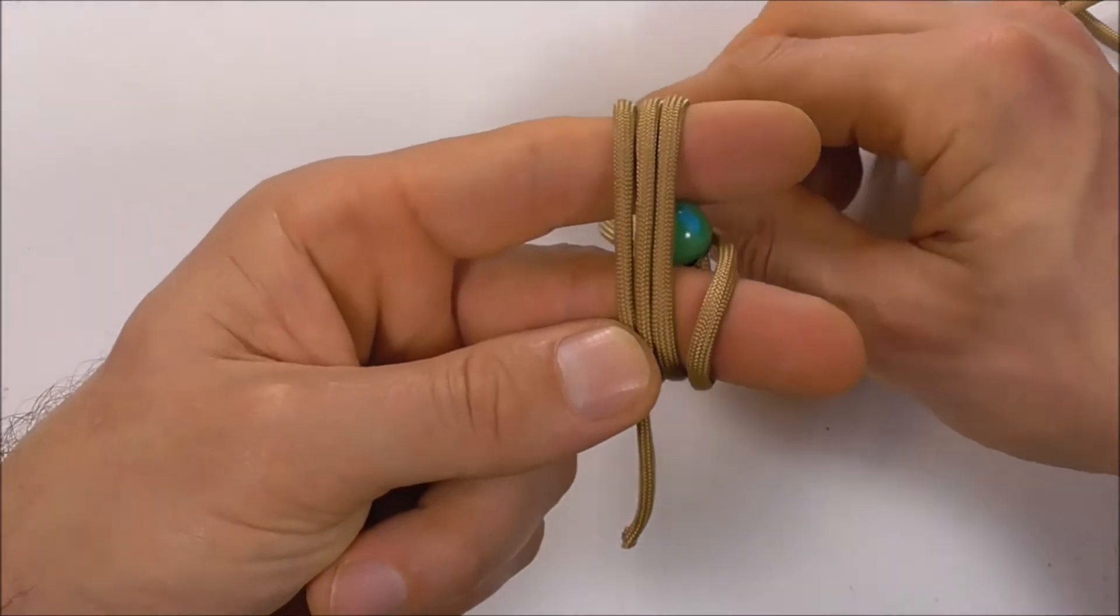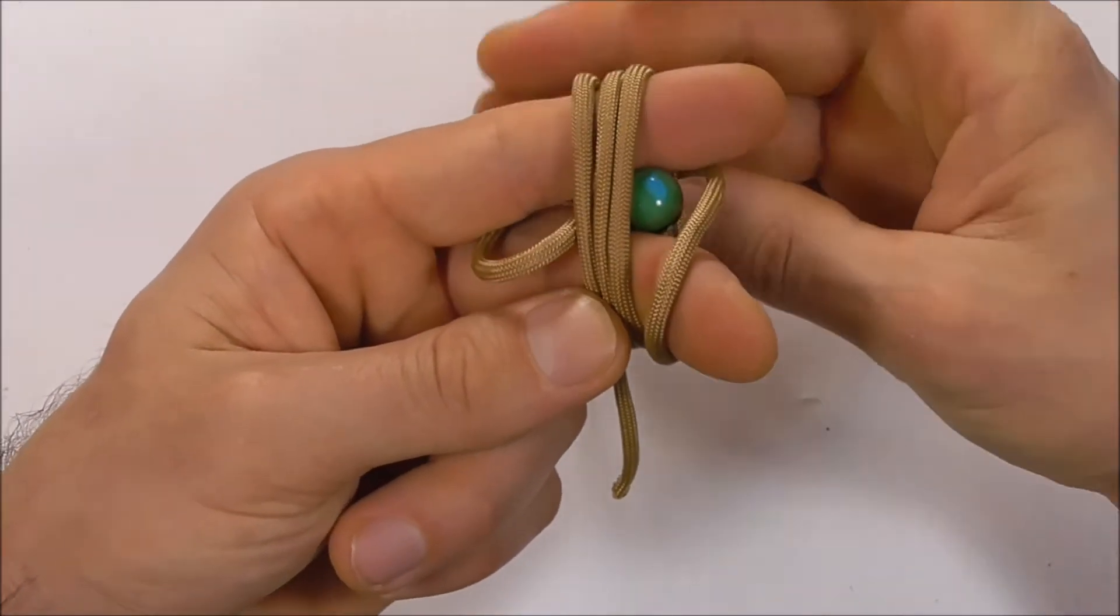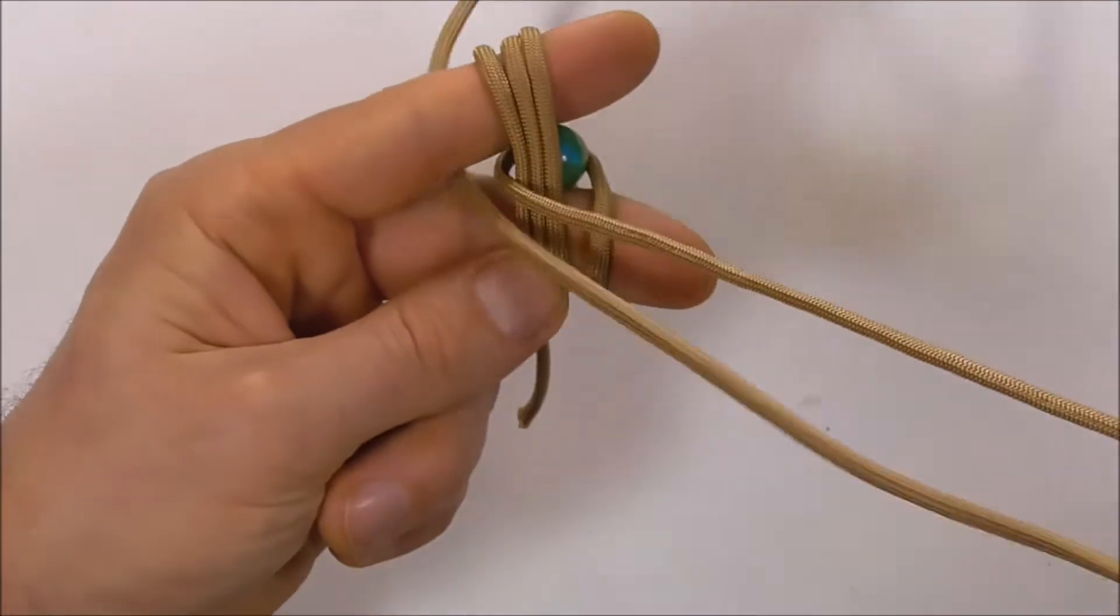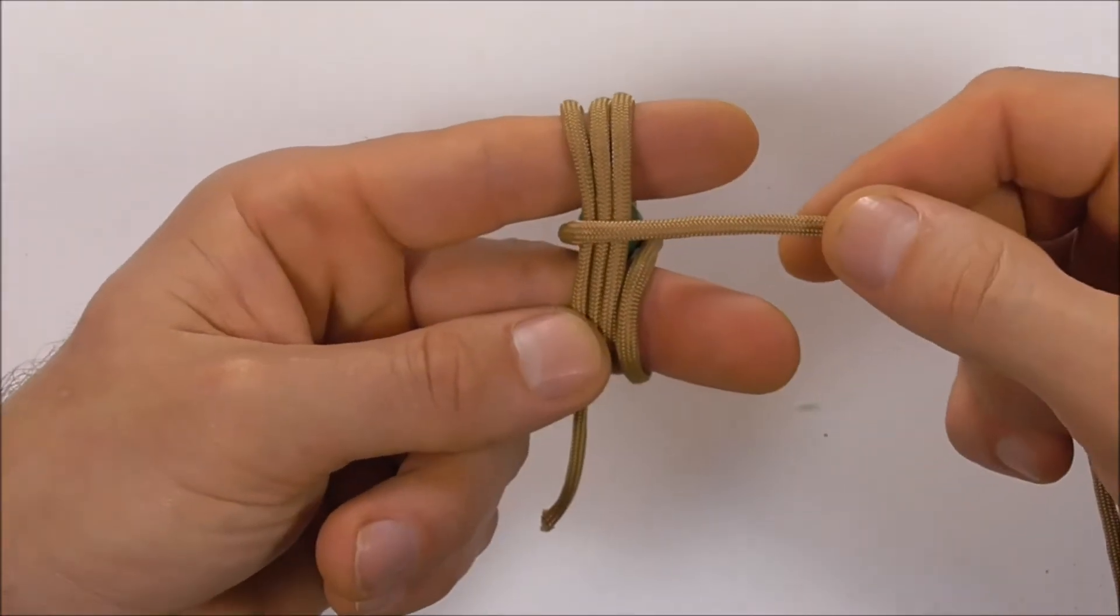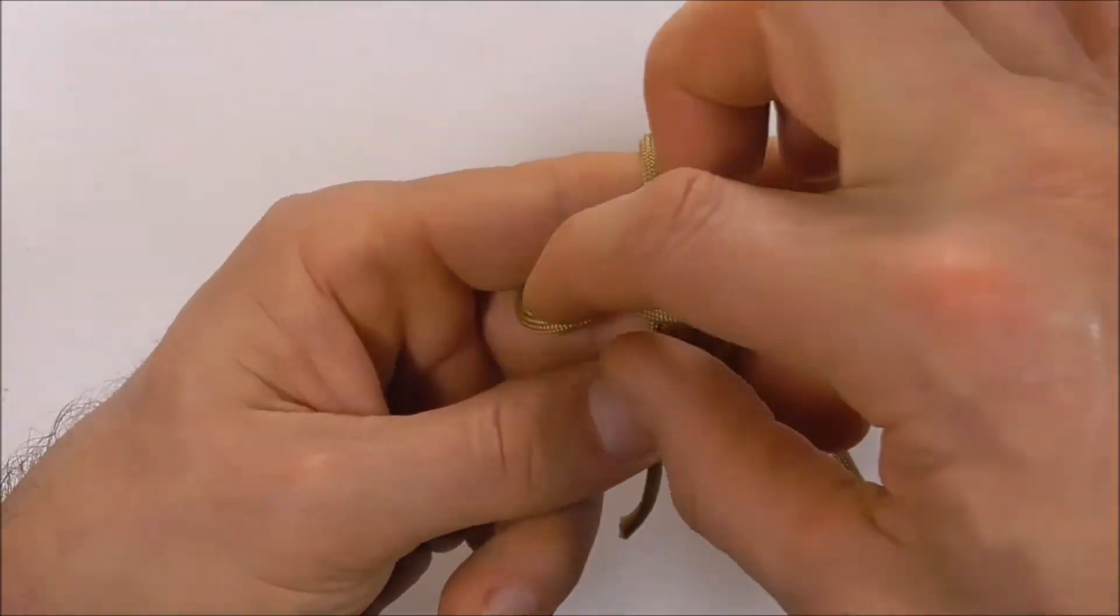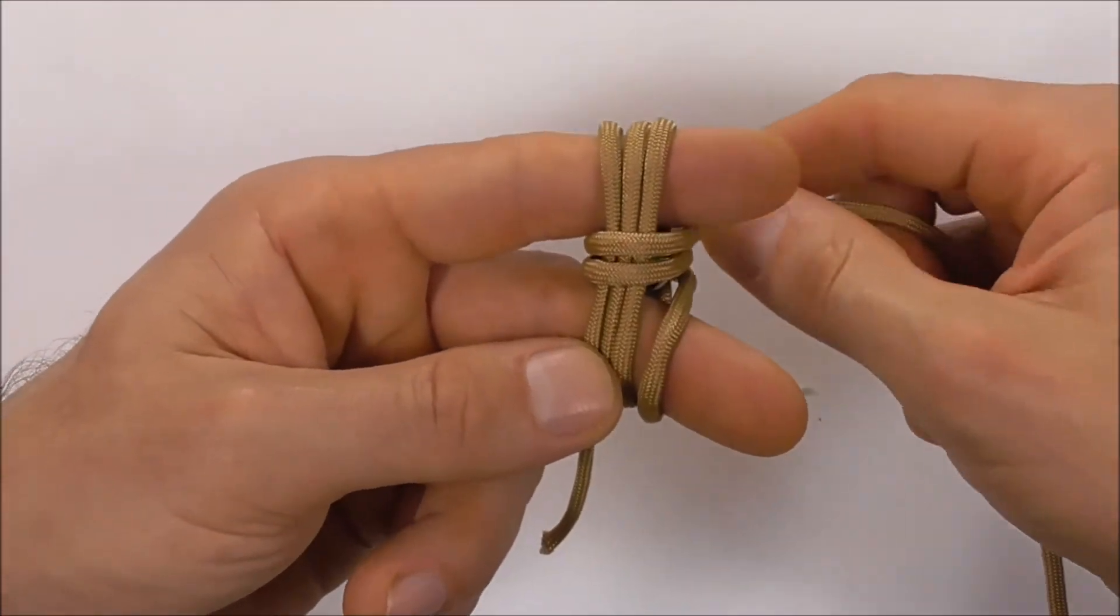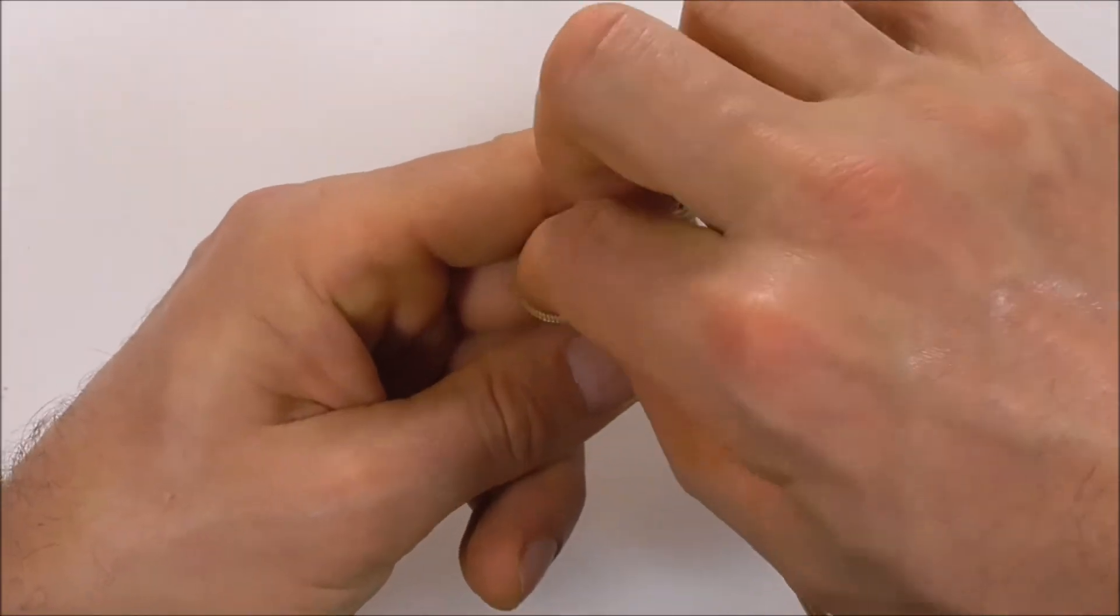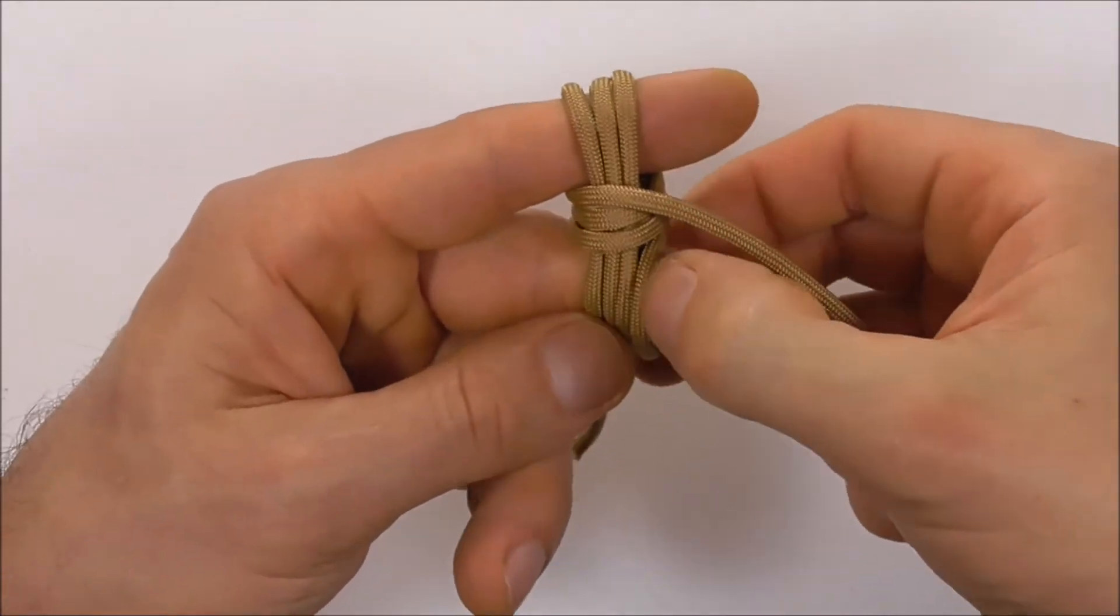And on the fourth one, just go over one finger instead of both of them. Now we're going to switch directions. I'm going to take my end up through the gap here and pull that all the way through, and I'm also going to do three wraps.